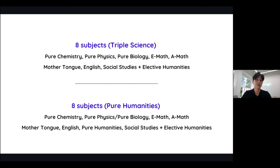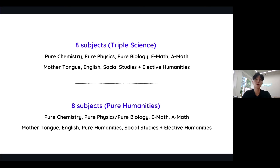Starting with your eight-subject combination, which is your triple science combination, meaning you'll be taking pure chemistry, pure physics, and pure biology. On top of that, you'll also be taking your E-math and A-math, your mother tongue, English language, and lastly, social studies plus one elective humanities. Take note that whenever I mention humanities, it is a choice between geography, history, and English literature.